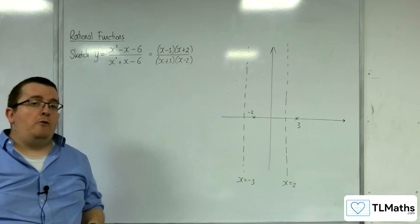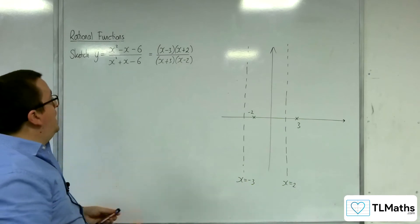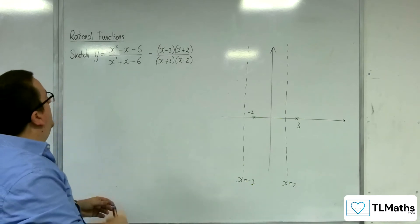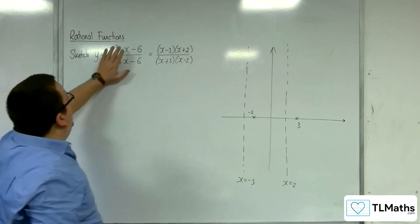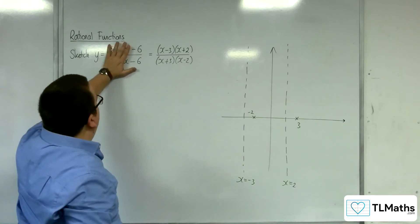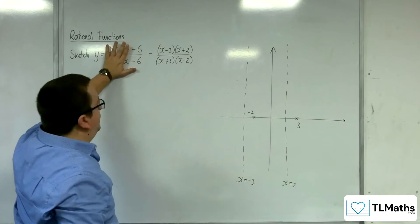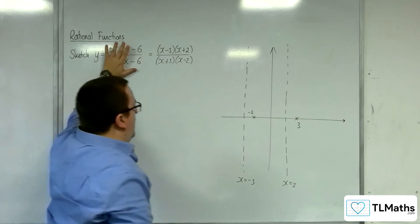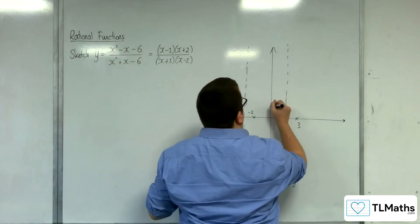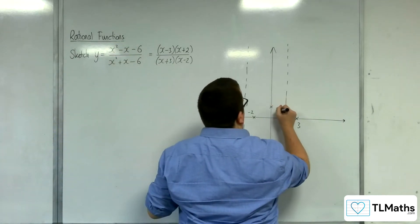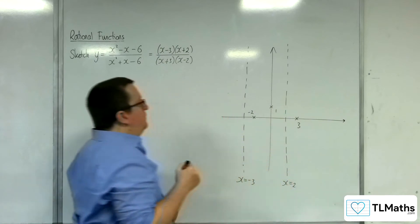How about where it's crossing the y-axis? That would be when x is 0, and so we would get minus 6 over minus 6, which is 1. So, it's crossing through the y-axis at 1.